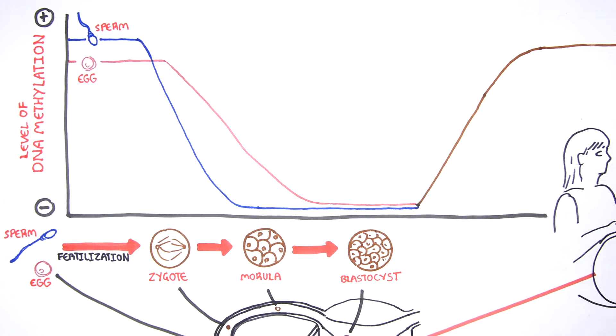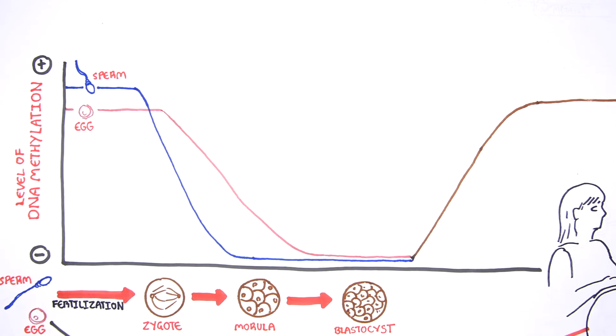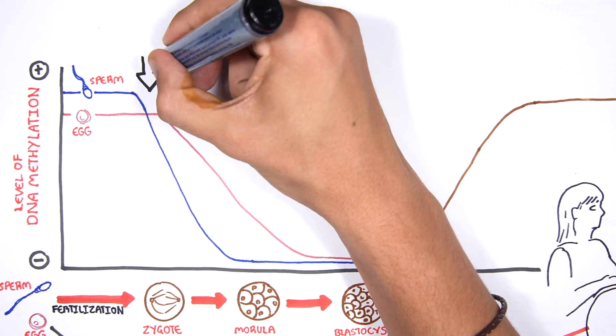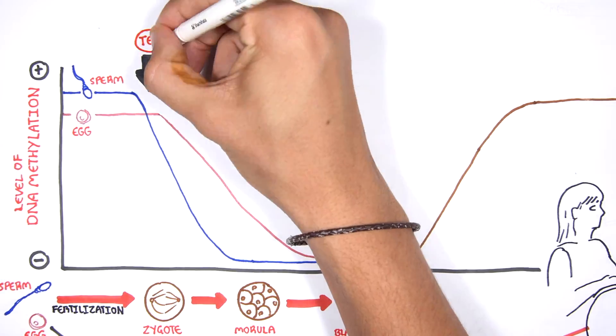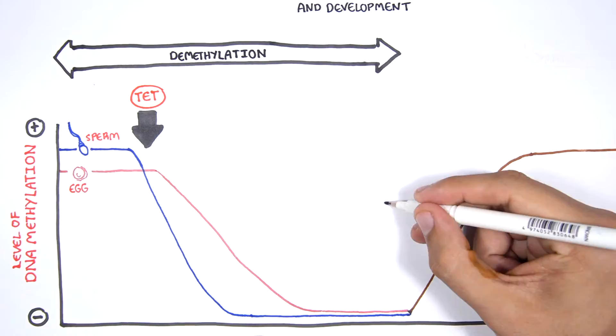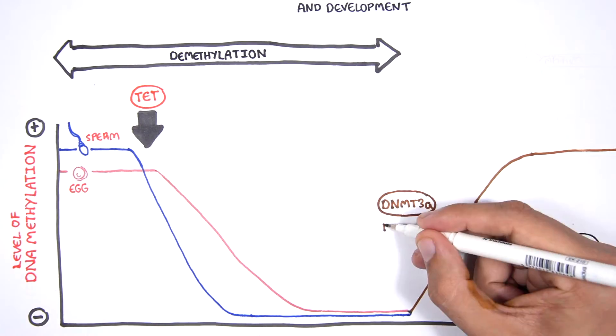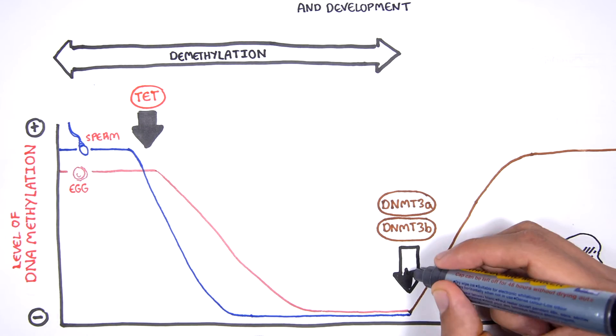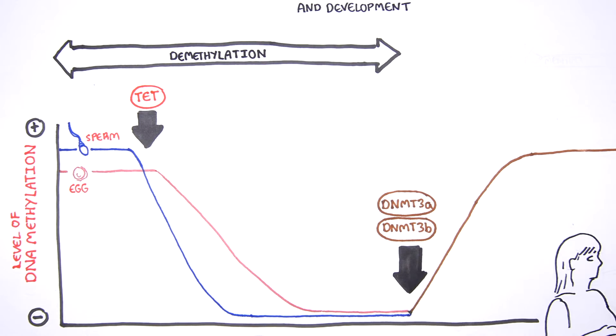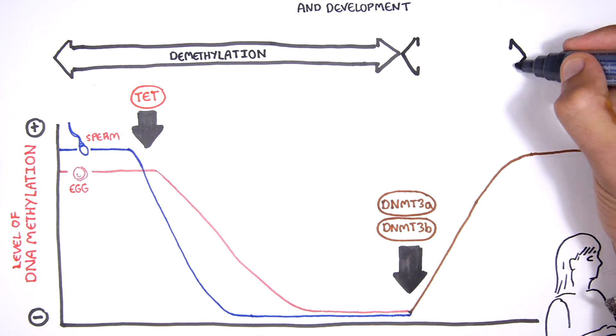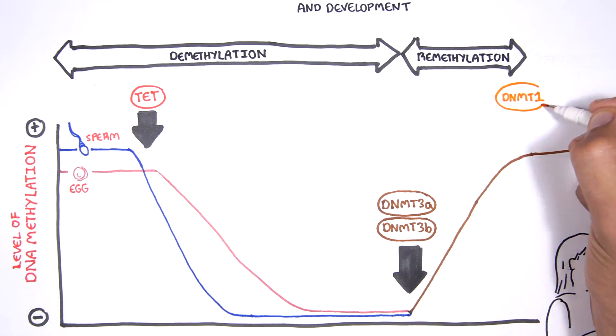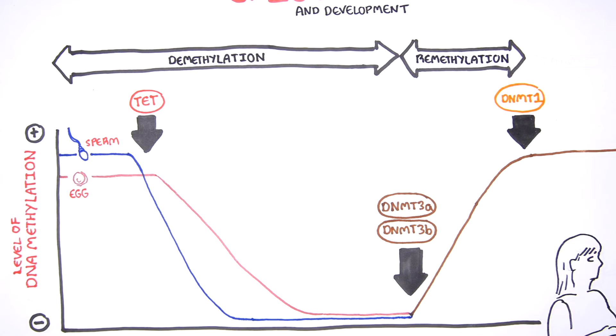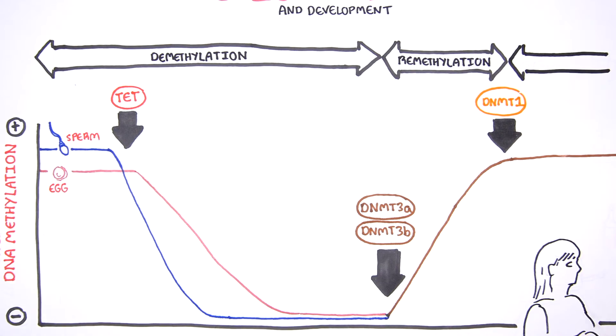The initial enzymes responsible for removing DNA methylation patterns from the maternal and paternal genomes are enzymes called TET. Methylation is carried out by DNMT enzymes. DNMT3A and DNMT3B are responsible for de novo DNA methylation of embryonic cells, and DNMT1 is responsible for maintaining the DNA methylation state in somatic cells during each cell division.